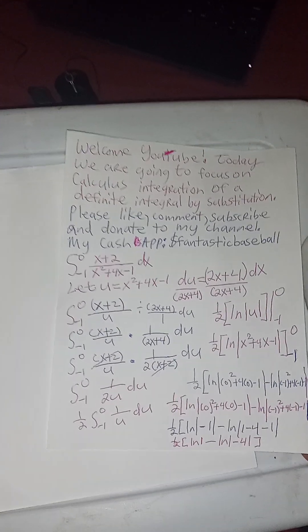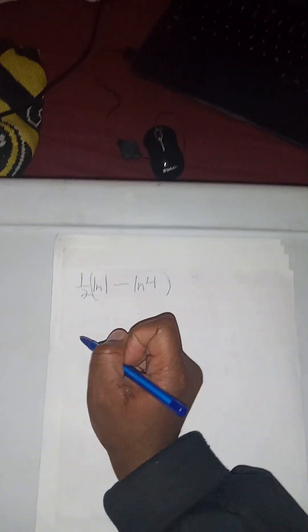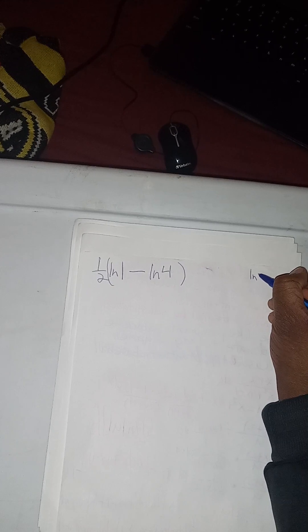So one half times the natural log of the absolute value of 1, which is the natural log of 1, minus the natural log of the absolute value of negative 4, which is the natural log of 4. We flip the sign in parentheses because the one half is going to multiply both parts. And natural log of 4 can be rewritten as the natural log of 2 squared.